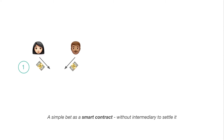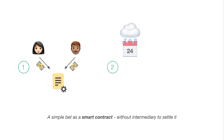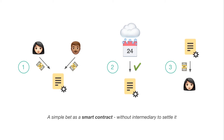So they both put money into a smart contract. This contract sets the betting conditions and will release the funds to the winner. On December 25th, the smart contract talks to an outside API and checks if it snowed on December 24th. If it did, the contract sends the money to Alice's address; if not, it sends it to Bob's. This is how a smart contract could settle a simple bet without an intermediary.